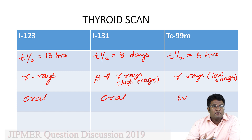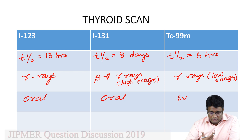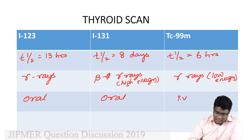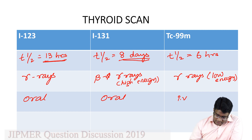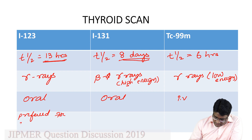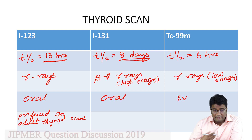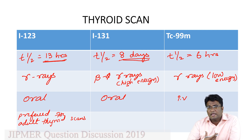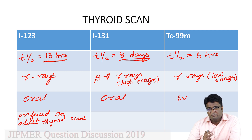Iodine 123 is the preferred agent for thyroid scanning. It does not produce beta rays and does not cause thyroid stunning. It has a shorter half-life compared to iodine 131. It is preferred for adult functional thyroid scans — such as for Graves' disease and Hashimoto's — because there is no emission of beta rays and the gamma ray energy is lower.